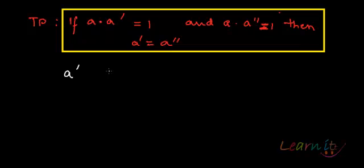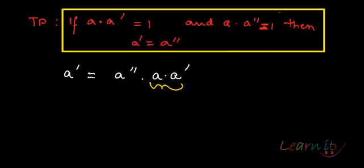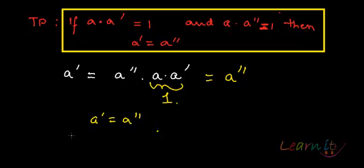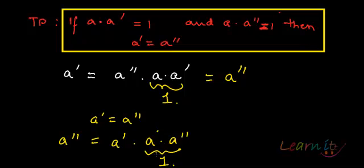Again, I start with a prime as a number. A prime equals a double prime dot a dot a prime. Looking at this, since a prime is itself an inverse, the portion (a dot a prime) equals 1, which means a prime equals a double prime. Similarly, starting with a double prime: a double prime equals a prime dot a dot a double prime, and since (a dot a double prime) equals 1, a double prime equals a prime. Both approaches give the same result.